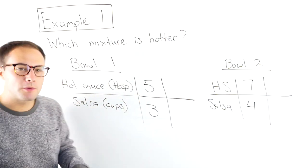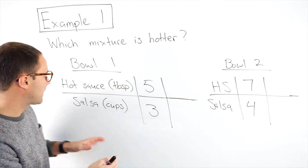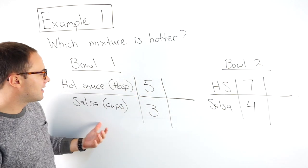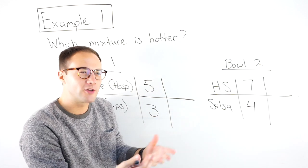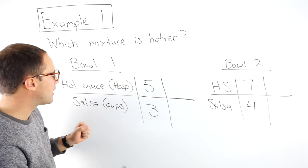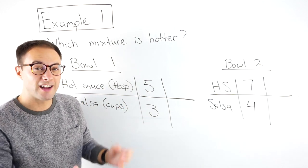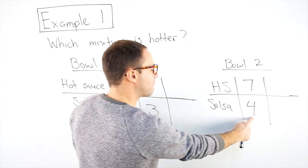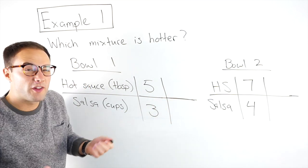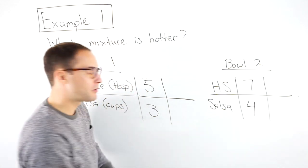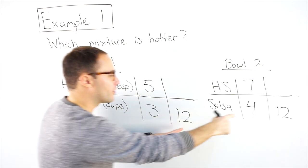To be able to compare these, it helps to be able to compare having the same quantity. I can't compare which one's hotter because this has only three cups of salsa, but this has four cups of salsa. Yeah, we have more hot sauce, but there's also more salsa to kind of absorb all that hot sauce. So I want to compare with the same amount of salsa in each and then see which one has more hot sauce. If I'm looking at three and four, what's the least common multiple of three and four? Well, hopefully you realize 12 would be my least common multiple.